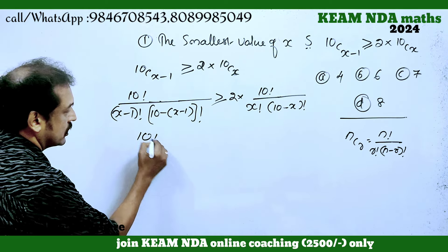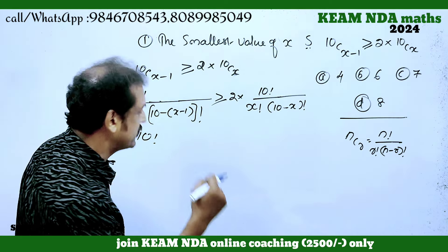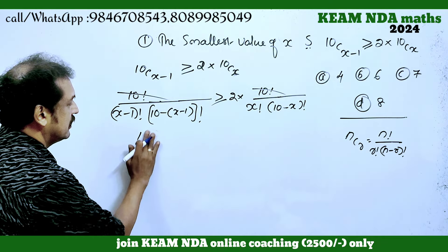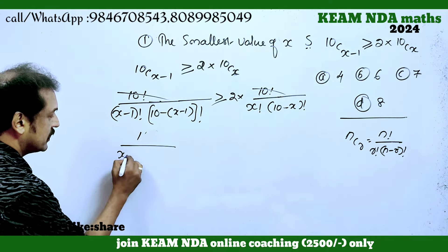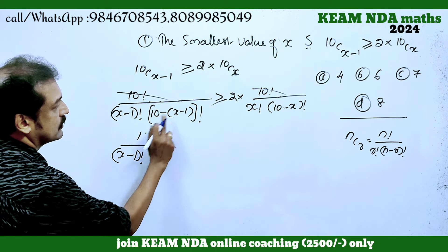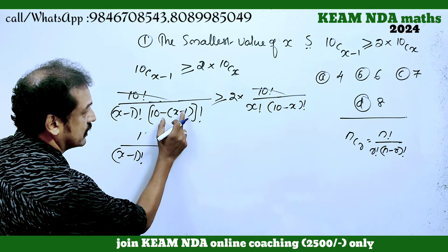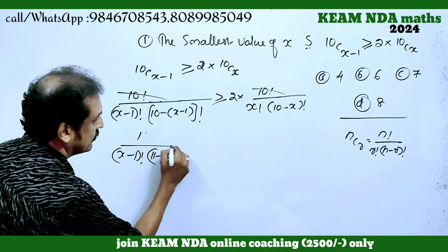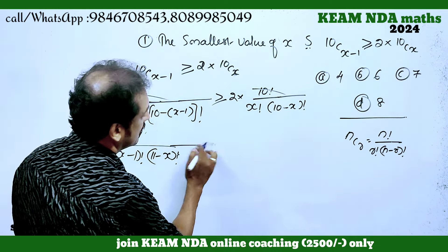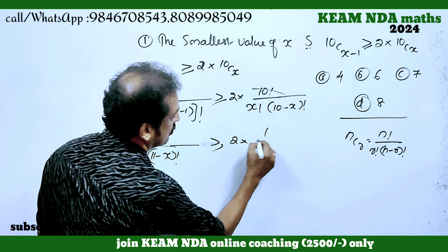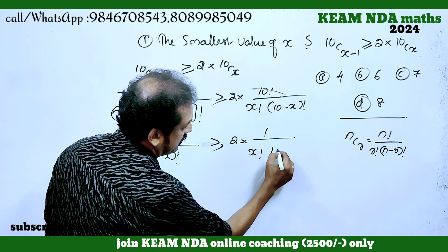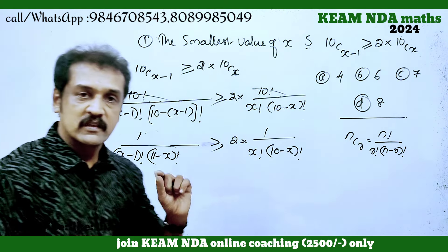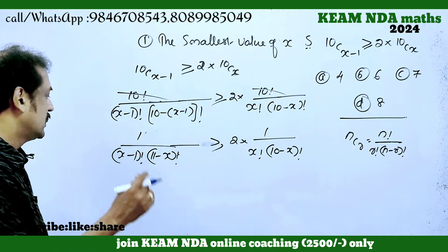The left-hand side gives us 10 factorial times 1 over (x-1) factorial into (11 minus x) factorial. The right-hand side is 2 into 1 over x factorial into (10 minus x) factorial. Now we proceed to simplification.